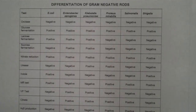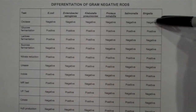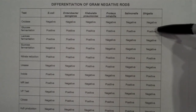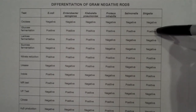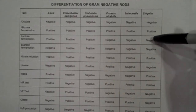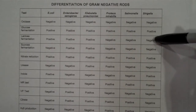If we take a look, the oxidase test doesn't help us — all the bacteria test negative. The glucose fermentation test doesn't help us either — all the bacteria test positive. But lactose fermentation is just perfect: half the bacteria test positive and half the bacteria test negative.